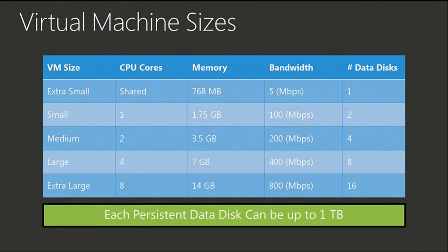We wanted to support big-scale applications with a lot of data. VM sizes range from the shared-core extra small all the way to the extra-large eight-core machine, with up to 16 data disks depending on VM size. The largest size of a page blob in Windows Azure Storage is one terabyte, so you can add up to 16 one-terabyte disks to a virtual machine, and then stripe them using OS-level striping to create a 16-terabyte stripe disk.